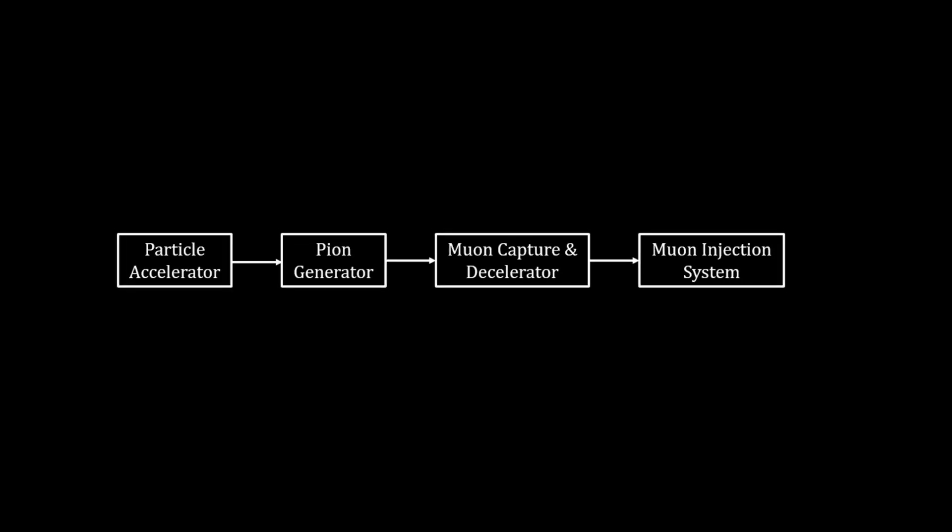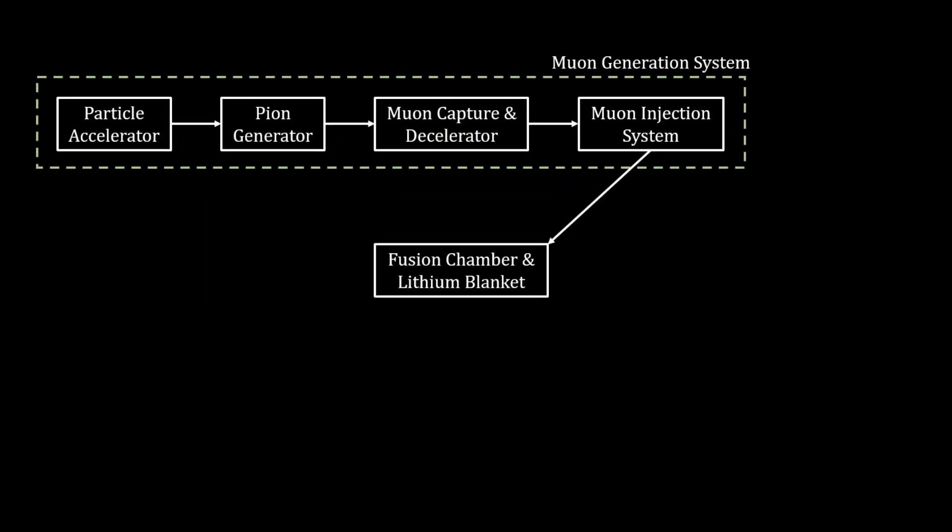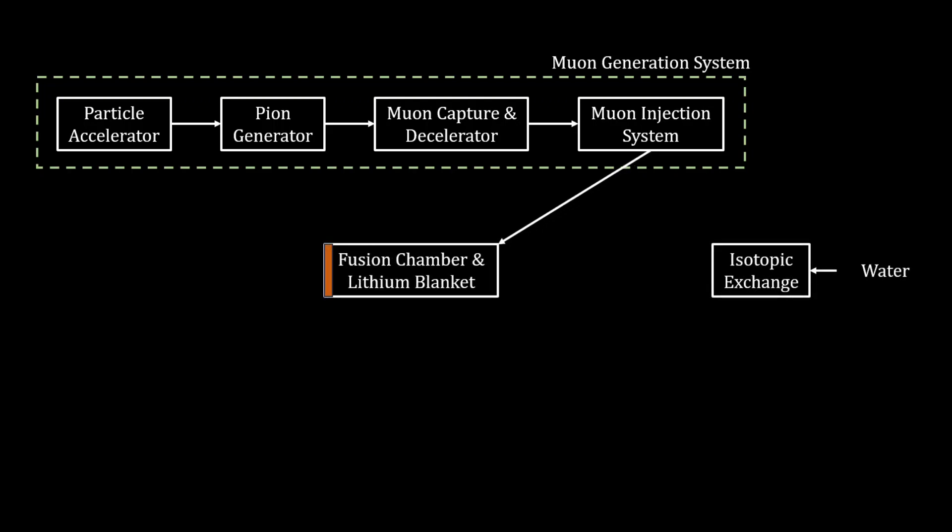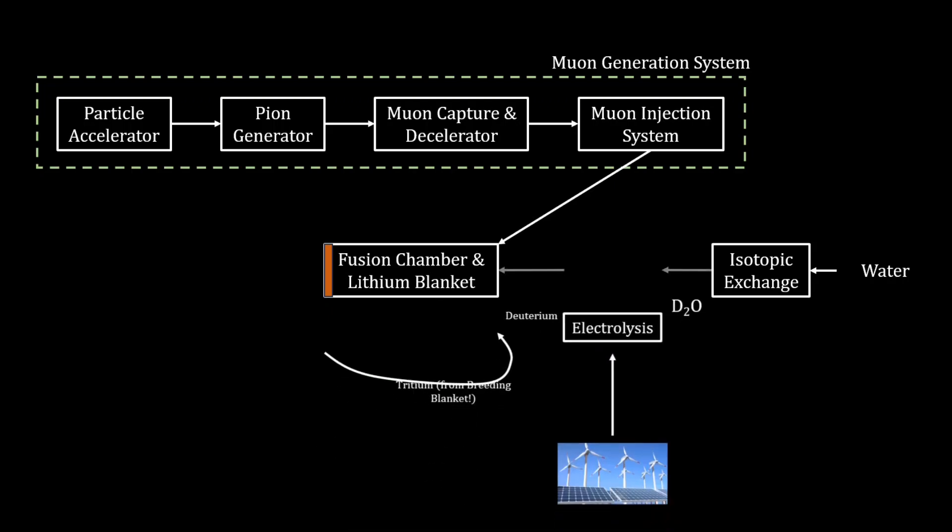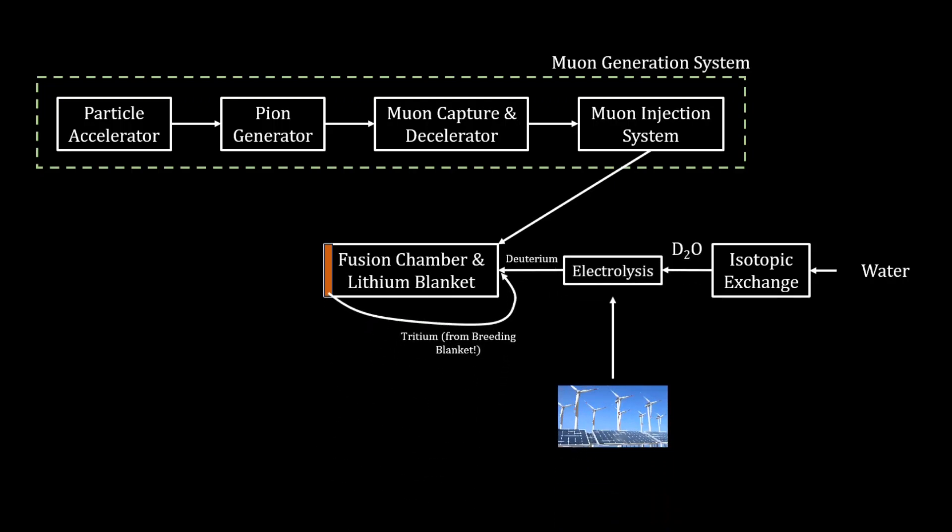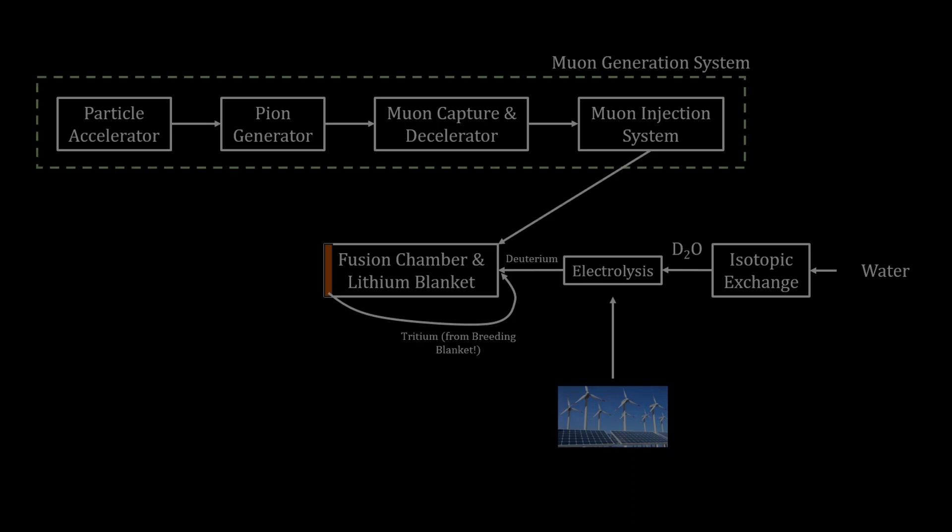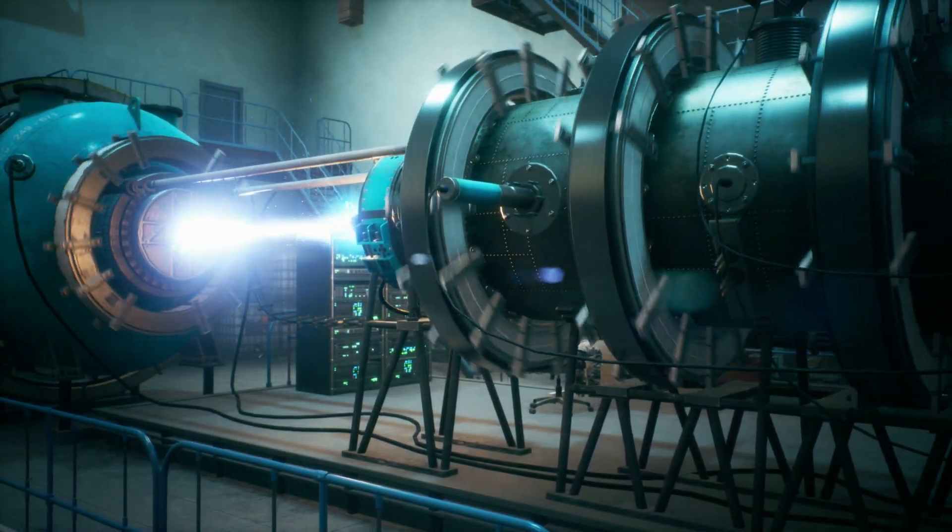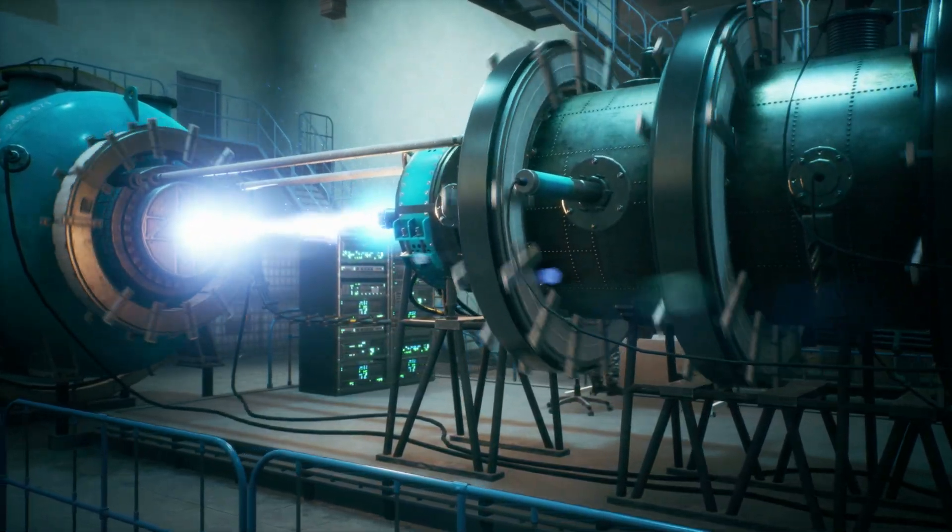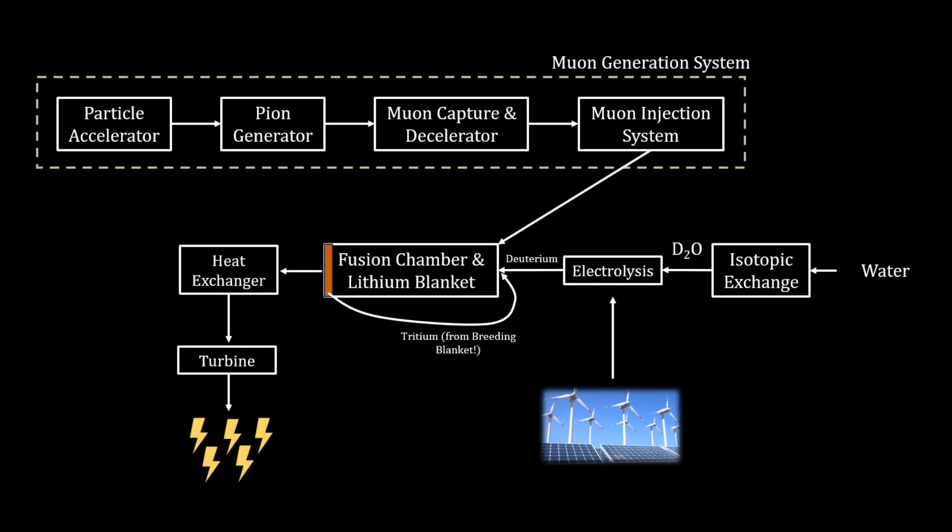Muons are then injected into a fusion chamber with deuterium. The deuterium can come from water, which contains a small amount of heavy water, D2O, and this can be separated via isotopic exchange or distillation, followed by electrolysis. Following nuclear fusion at room temperature, the tremendous amount of energy released is captured by a heat exchanger, after which it can be interconverted into a more convenient energy form.